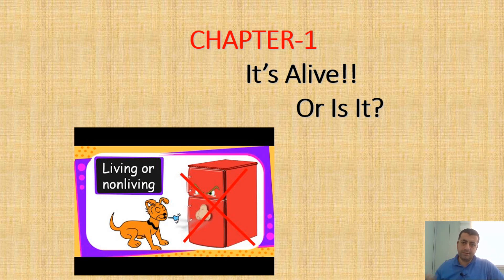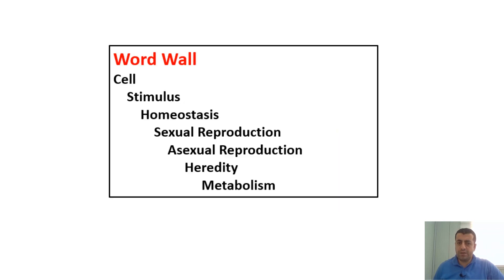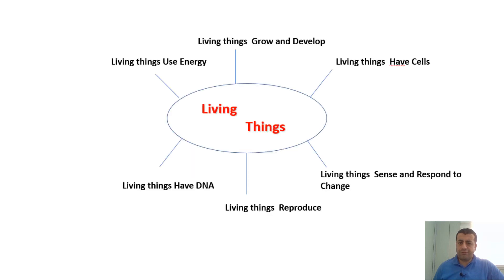Hi, welcome to science lesson, Chapter One: It Is Alive or Is It? Section One: Characteristics of Living Things. We are going to learn the following topics: cell, stimulus, homeostasis, sexual reproduction, asexual reproduction, heredity, and metabolism.